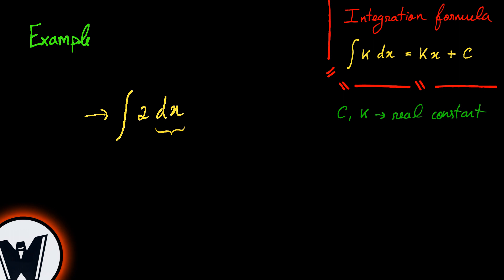Now k is a real constant which in this case is substituted by 2, and the result will give us 2 multiplied by x plus the constant of integration, the latter resulting from the indefinite integral or antiderivative.